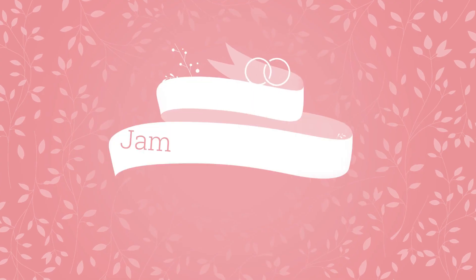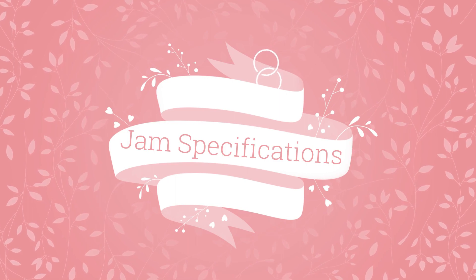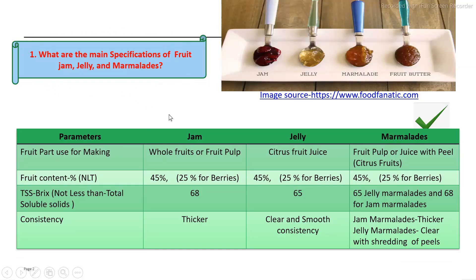Let's look at standards for jam, jellies and marmalades. As per the food safety standards, the minimum requirements — the main parameters are the fruit content, then brix, and the consistency. These are the main parameters that differentiate between jam, jellies and marmalade. Jam is a product made from fruit pulp or whole fruits, with a minimum fruit content of at least 45% for regular fruits, and for berries a minimum of 25% fruit content.